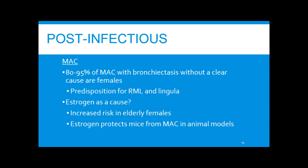More recently, MAC has been implicated in bronchiectasis. Originally it was thought to be just a colonizer, but registries of bronchiectatic patients show that 80 to 95% of patients with MAC and bronchiectasis without a clear cause are female — this is Lady Windermere syndrome. These are typically tall, thin women with a chronic cough they try to suppress, with predisposition for the right middle lobe and lingula. Most of these patients are postmenopausal, supporting the idea that low estrogen may be a risk factor, and mice models show higher estrogen protects against MAC.